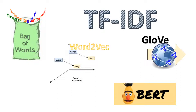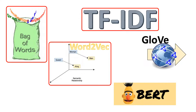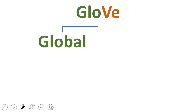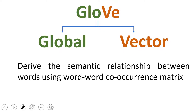Hello everybody. In word embedding techniques, so far we learned about bag of words, TF-IDF, and Word2Vec. Next we're going to learn about GloVe. As you can clearly understand from how it's written, GloVe is a combination of two words: global and vector. Its definition simply says it helps in deriving the semantic relationship between words using a word-to-word co-occurrence matrix.